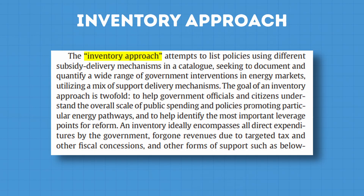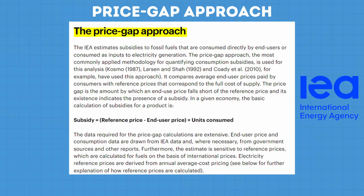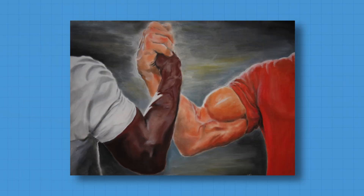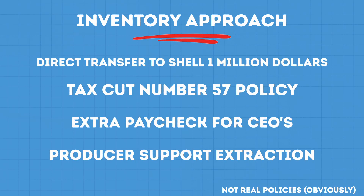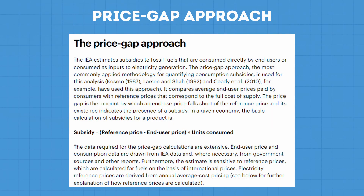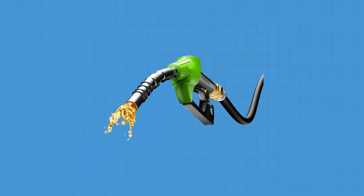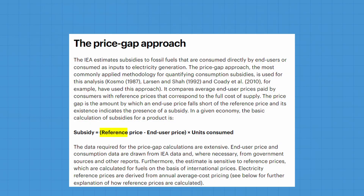The inventory approach, mostly used by the OECD; the price gap approach used by the IEA; and a combination of the two approaches. The inventory approach looks at specific programmes and essentially makes a catalogue of them to aggregate the numbers. The price gap approach compares average end-user prices paid by consumers with reference prices that correspond to the full cost of supply, so it only looks at consumer subsidies. Reference prices, which can sometimes be hard to calculate, are normally based on international market prices. Since subsidies that don't affect the price aren't reflected, price gaps should be seen as lower bound estimates.